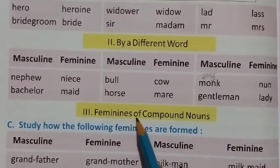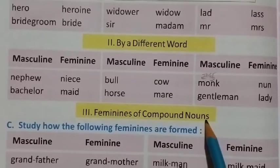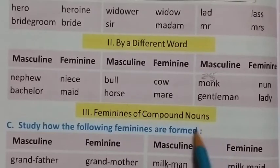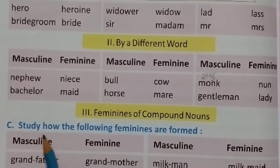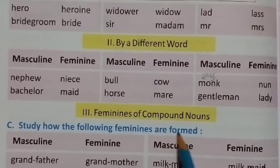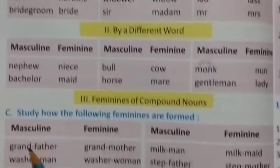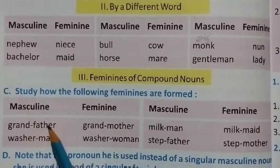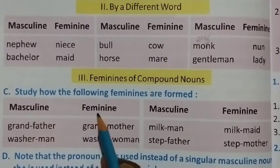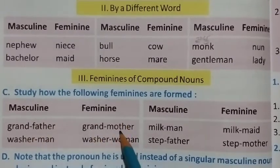The third way is feminines of compound nouns. Study how the following feminines are formed. For compound nouns, the first part of the word changes. For example: grandfather becomes grandmother.